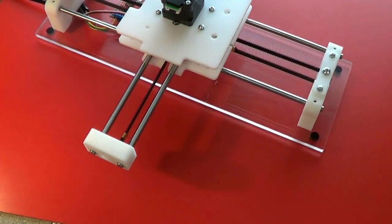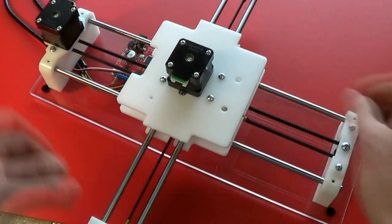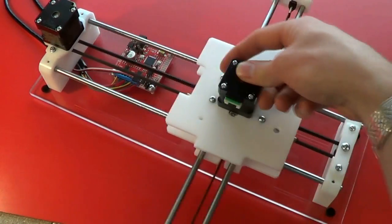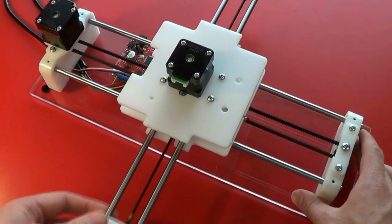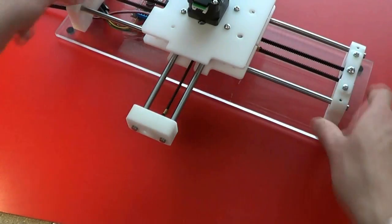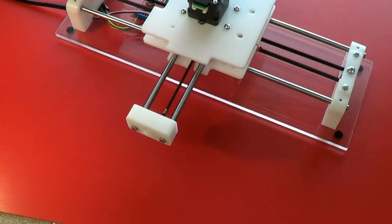There we have both the X and Y belts installed and tightened. The last step is to mount the penslide and connect everything up.